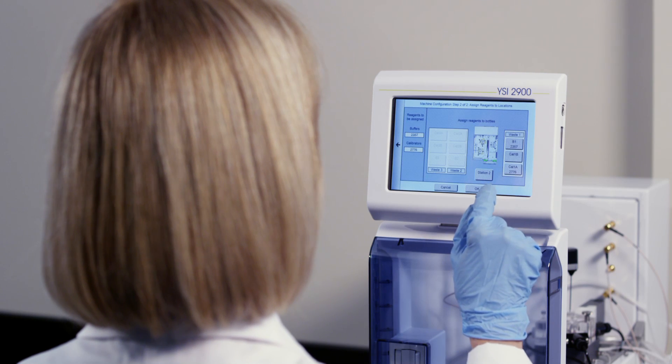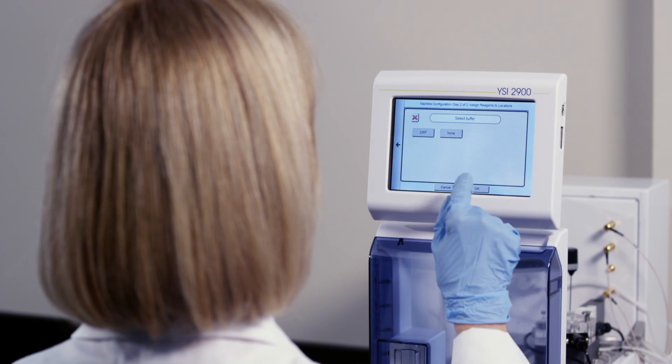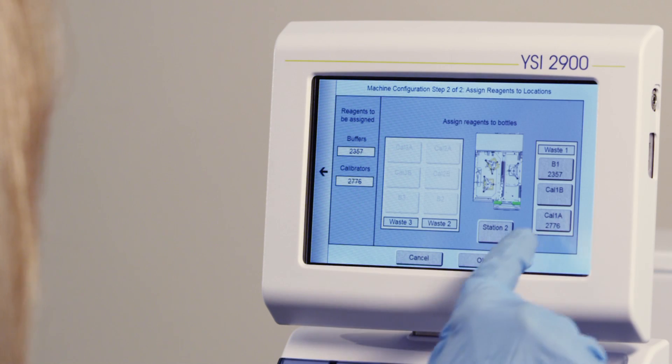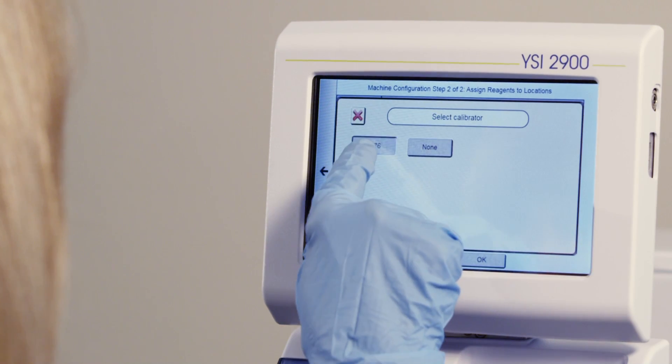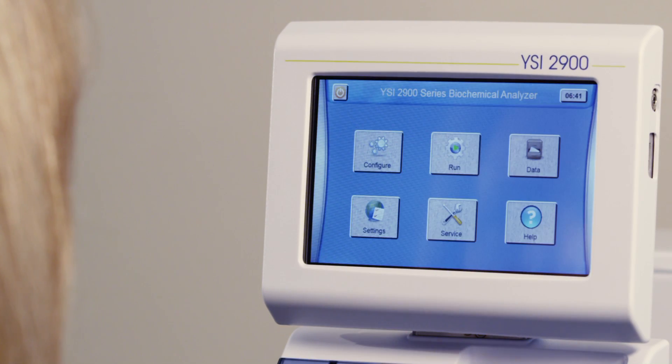Next, press the arrow at the right-hand side of the screen to assign reagents to bottles. Select each bottle and assign calibrators or buffer. When you are finished, press OK.